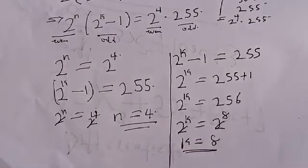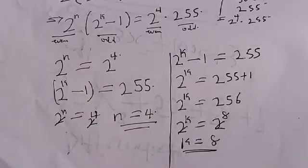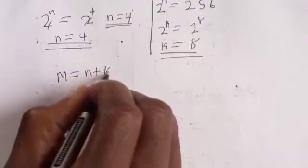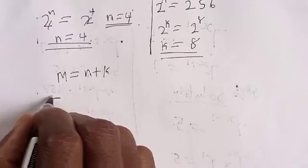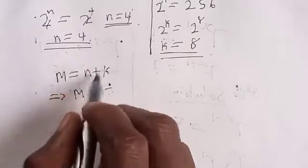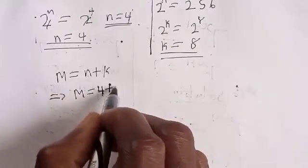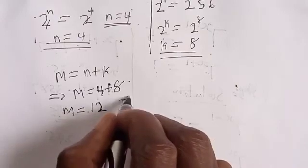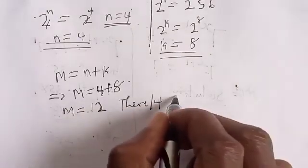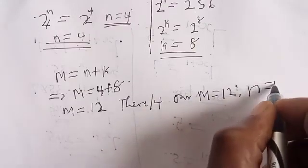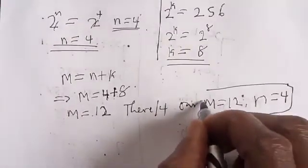Recall that m is equal to n plus k. We have found n equals 4 and k equals 8. Therefore m equals 4 plus 8, which means m is equal to 12. So our final answer is m equals 12 and n equals 4.